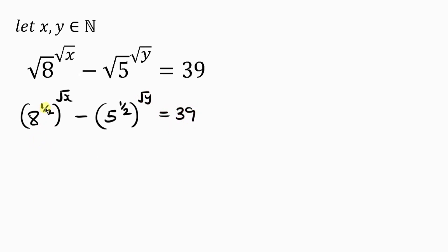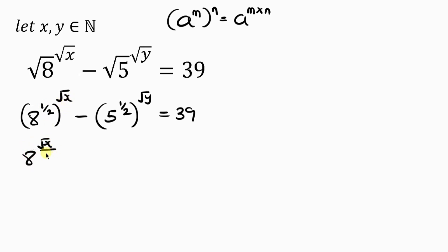Our next step is to multiply these powers. Remember from indices: whenever I have a base raised to the power of m, and that power is raised to the power of n, this means the base to the power of m times n — powers multiplied. So I'm going to have 8 to the power of the square root of x over 2, minus 5 to the power of the square root of y over 2, equal to 39.